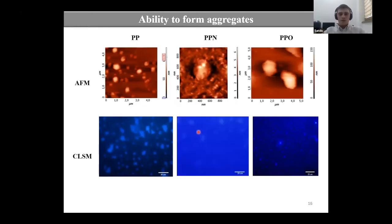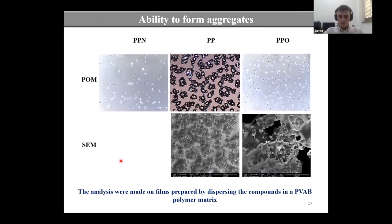The spherical shape of these aggregates were confirmed using techniques as atomic force microscopy and confocal microscopy. We used also polarized optical microscopy and scanning electron microscopy to observe these aggregates but these two techniques were done on compounds dispersed in a polymer matrix.